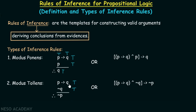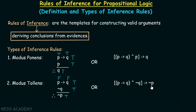If p implies q is true and not q is true, then q becomes false. If q is false, then p has to be false — it is not the case that p becomes true, because if p is true, then true implies false is false. If p is false, then not p will be true. Therefore, our final conclusion becomes true, and hence this argument is valid. We can write this argument as: p implies q, and not q, implies not p.